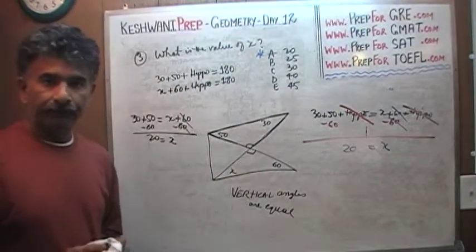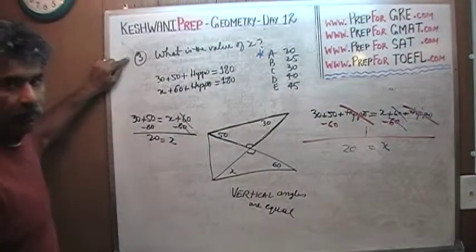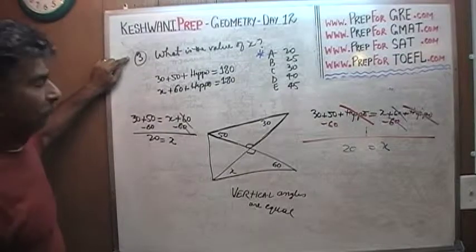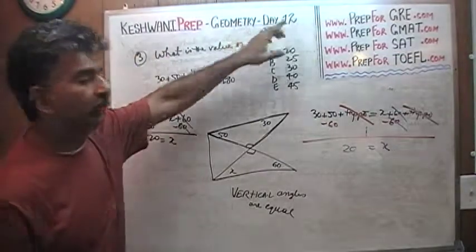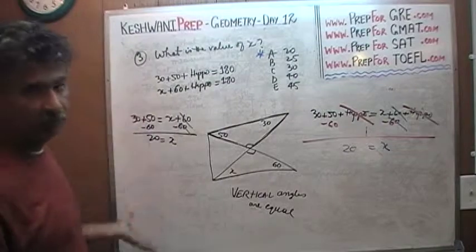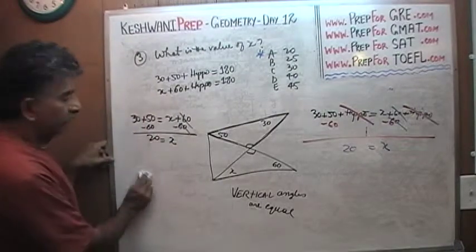Let's do one more problem shall we? Problem number 4. In case you're wondering why it says 3 here, because I started solving problems from yesterday, from day number 11. And we did two of them yesterday. I'm just continuing the numbers. Problem number 3. Let's do one more, problem number 4.